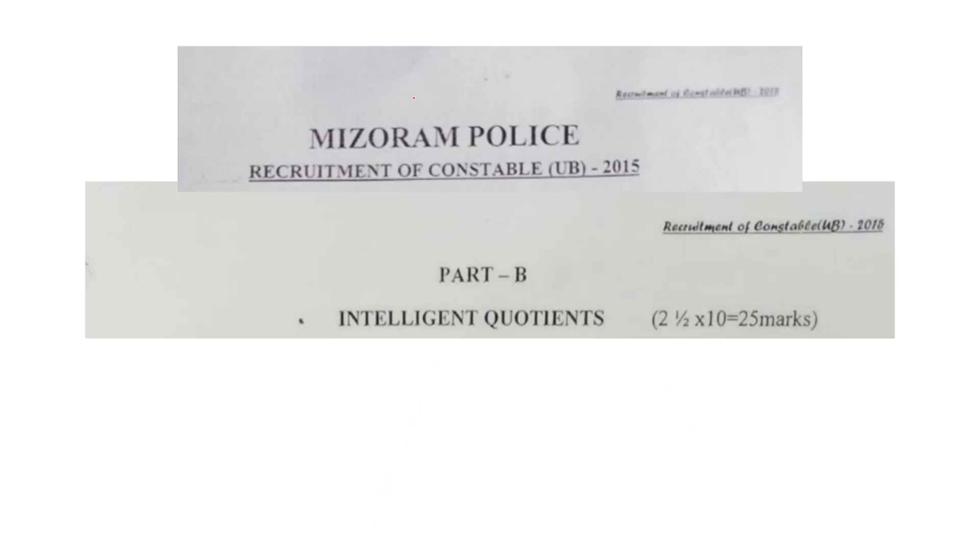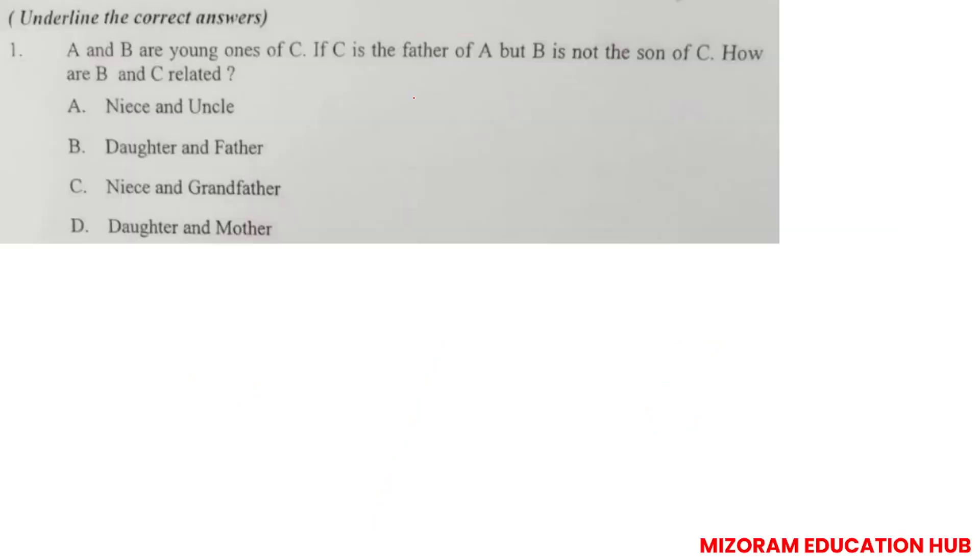Now question number 2. A and B are young ones of C. If C is the father of A but B is not the son of C, how are B and C related? Young ones means children. So A and B are children of C. Now C is the father of A, so father's gender will be plus. B is not the son of C, so B is the daughter of C, or C is the father of B. So daughter and father is the correct answer.